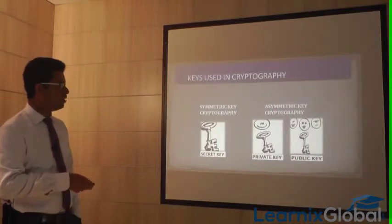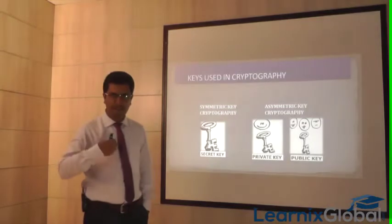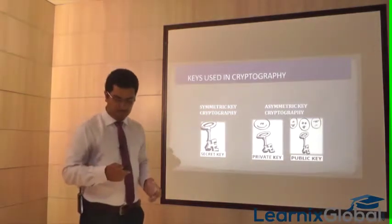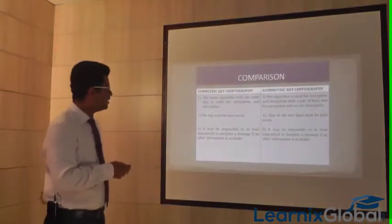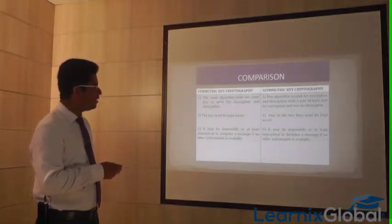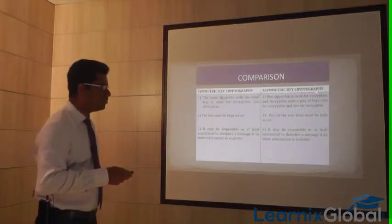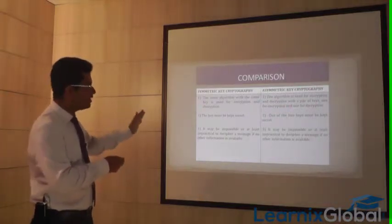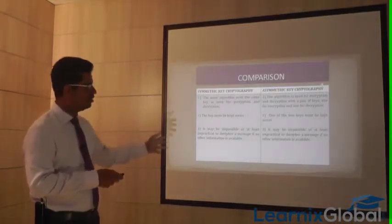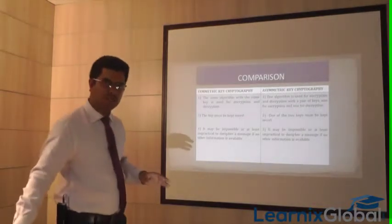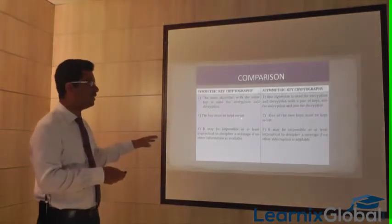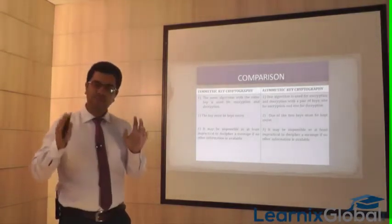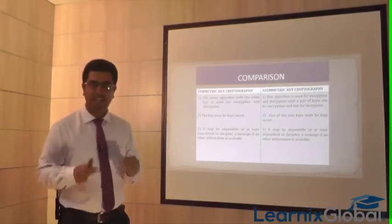Comparing the two: in symmetric key cryptography, the same algorithm and the same key are used for both encryption and decryption, and that key must be kept secret. In asymmetric key cryptography, one algorithm encrypts and another decrypts, using a pair of keys — the public key can be shared openly, but the private key must remain secret.